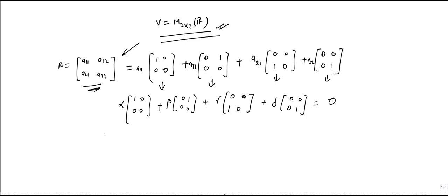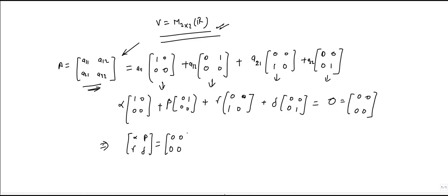We can write this sum as the matrix [α, β; γ, δ] equal to the zero matrix. Comparing entries, this implies that α = 0, β = 0, γ = 0, and δ = 0.